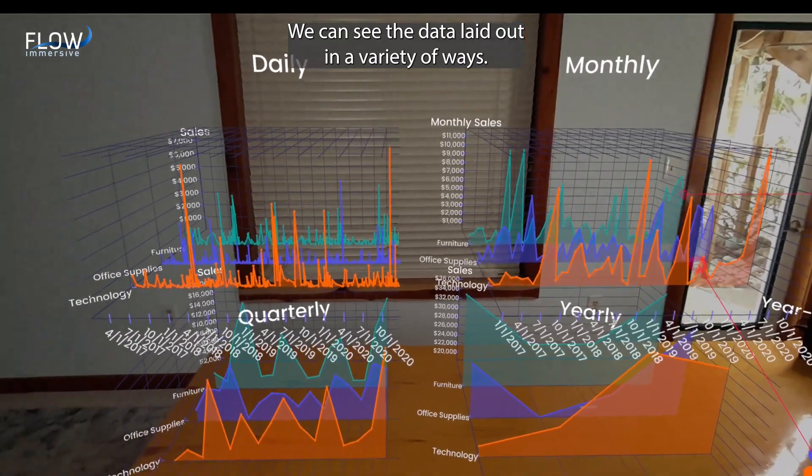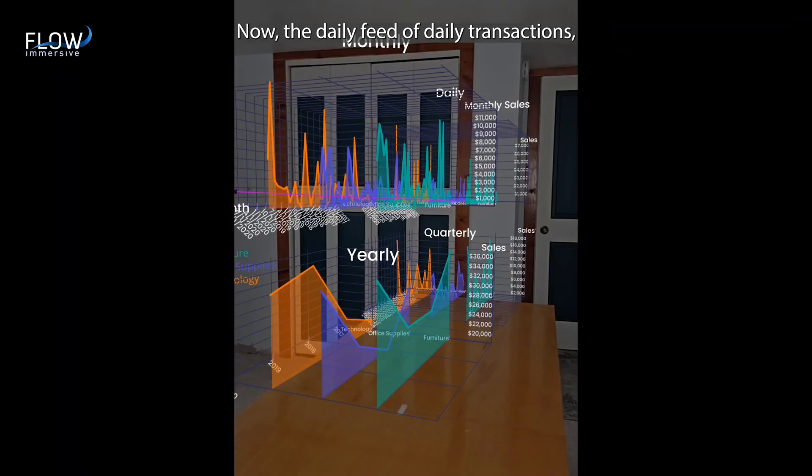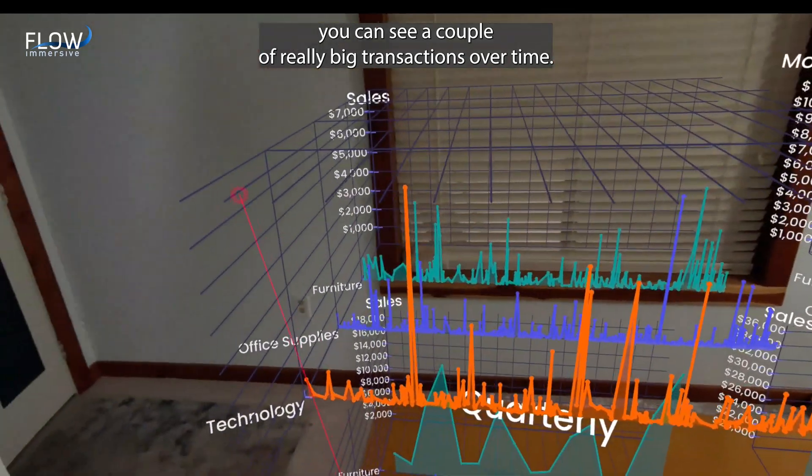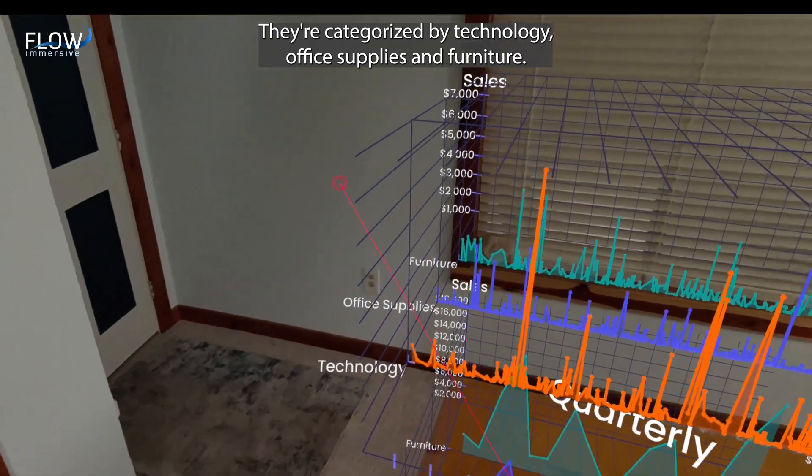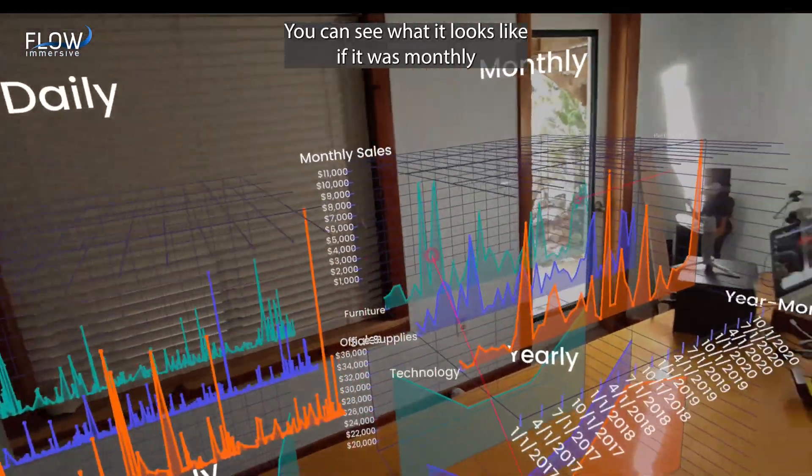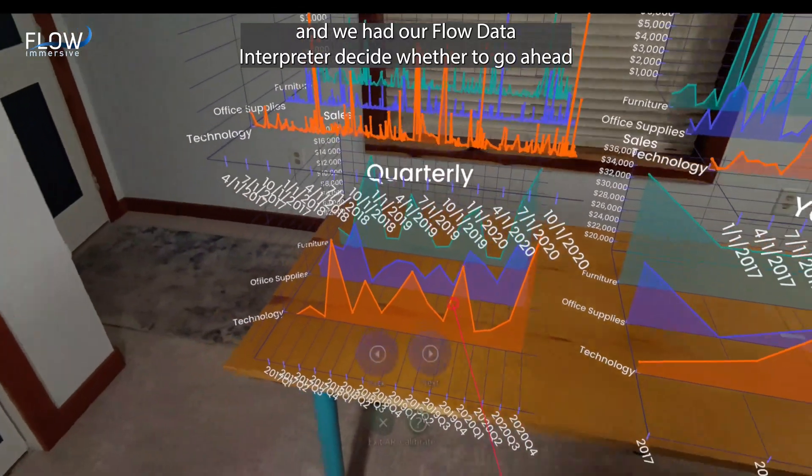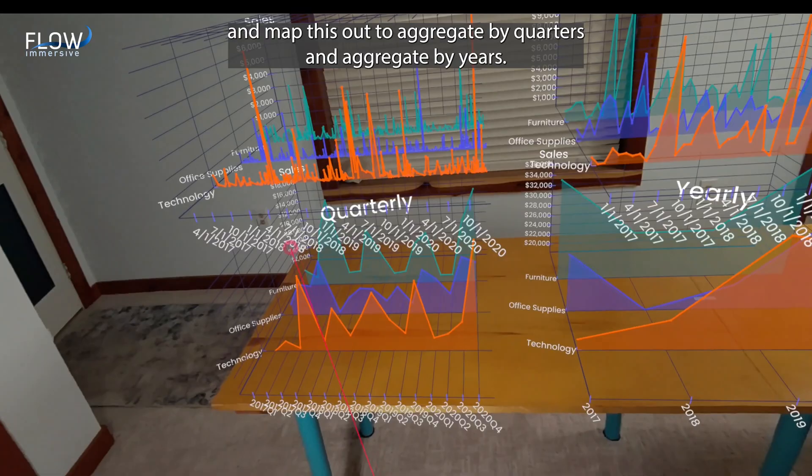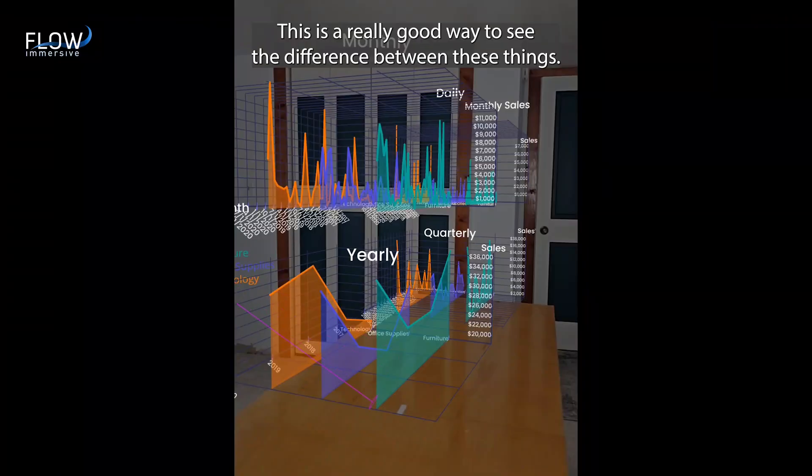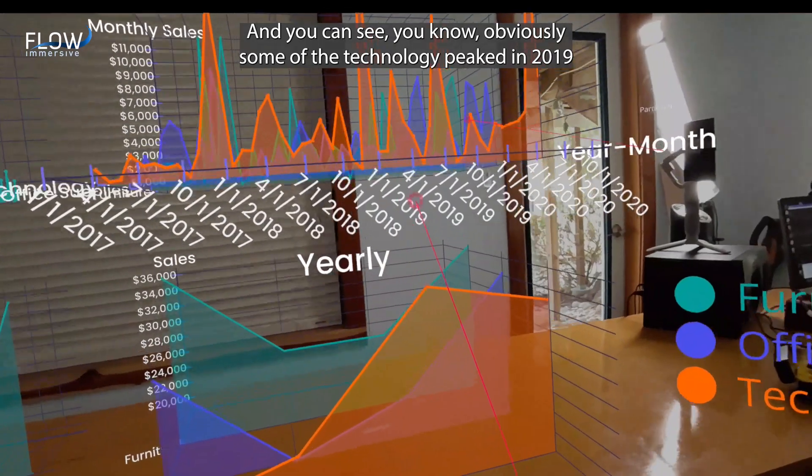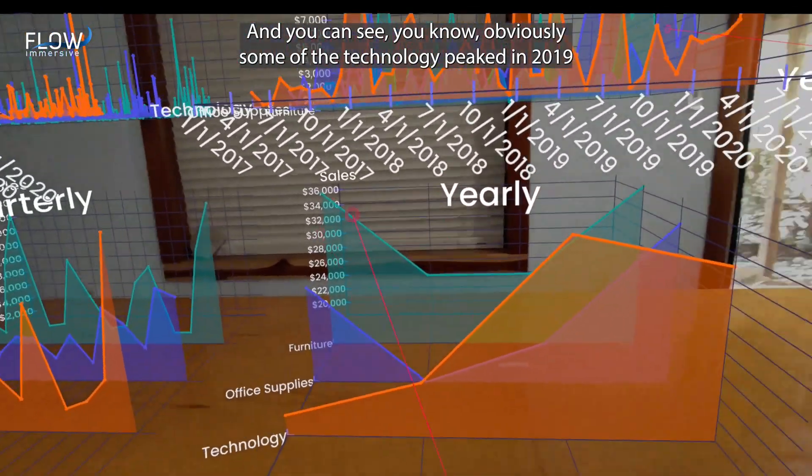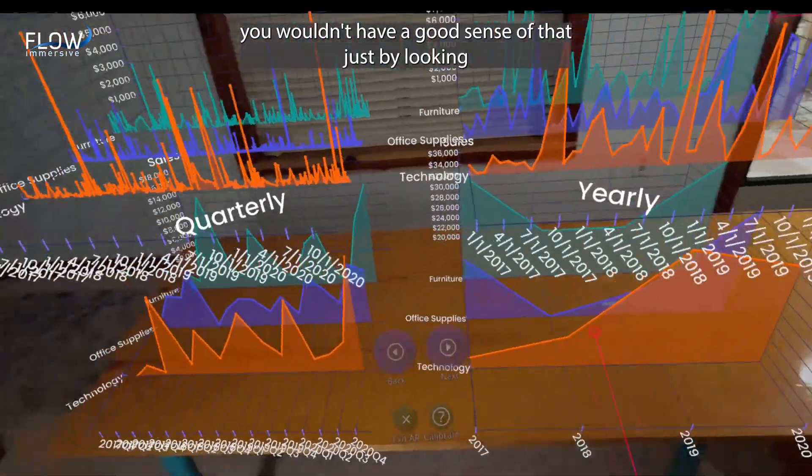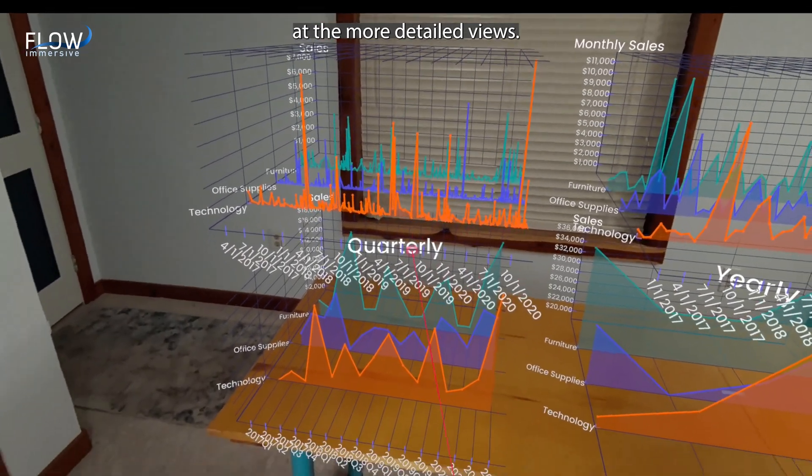Here we can see the data laid out in a variety of ways. Now, the daily feed of daily transactions, you can see a couple of really big transactions over time. They're categorized by technology, office supplies, and furniture. You can see what it looks like if it was monthly. And we had our flow interpreter decide whether to go ahead and map this out to aggregate by quarters and aggregate by years. This is a really good way to see the difference between these things. And obviously, the technology peaked in 2019 and dropped a little bit in 2020, but you wouldn't have a good sense of that just by looking at the more detailed views.